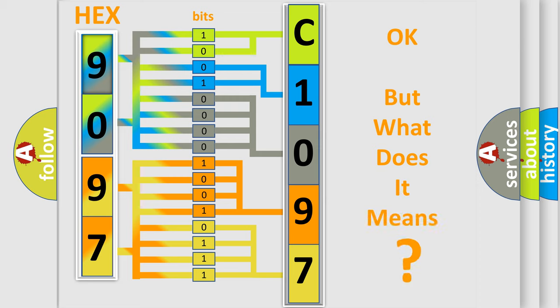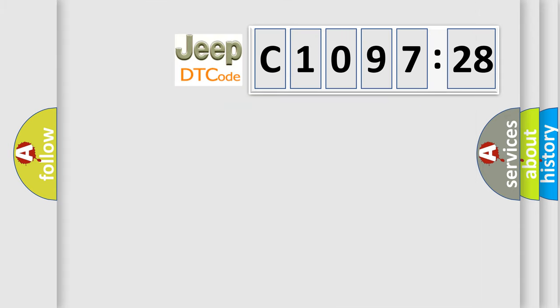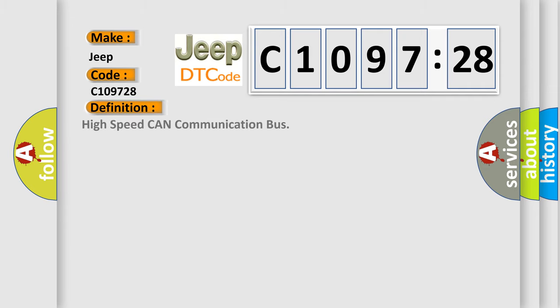The number itself does not make sense to us if we cannot assign information about what it actually expresses. So, what does the diagnostic trouble code C109728 interpret specifically for Jeep car manufacturers? The basic definition is high speed CAN communication bus.